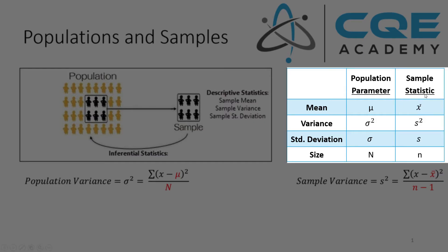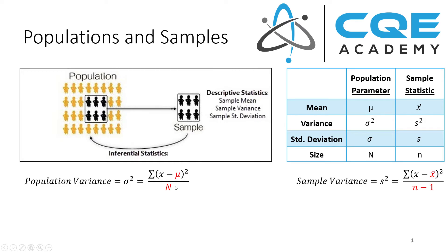When we talk about sample statistics, typically the mean is designated as x bar. The variance is called s squared, so this is the sample variance. The sample standard deviation is denoted by the letter s, and the sample size is denoted by the letter n.